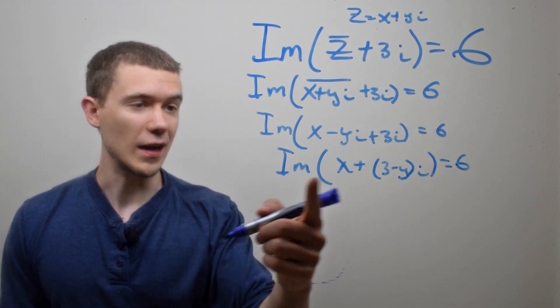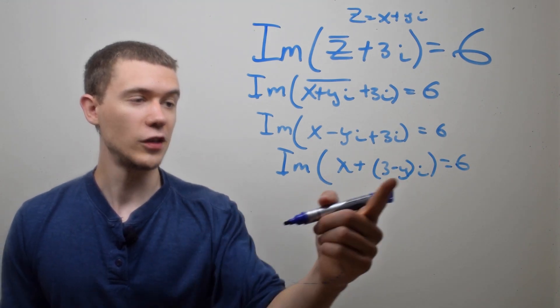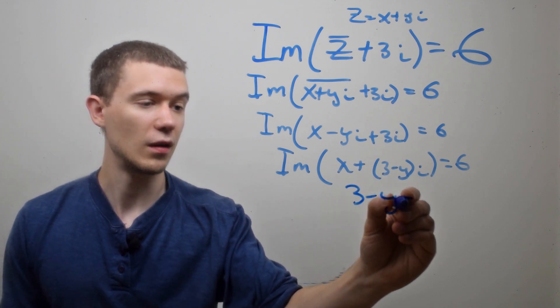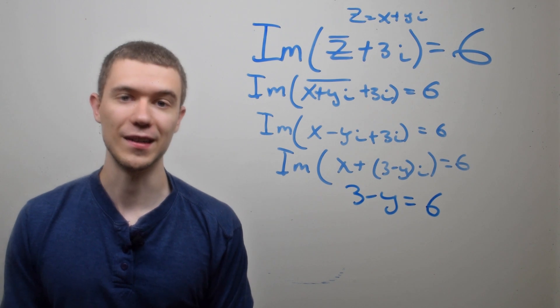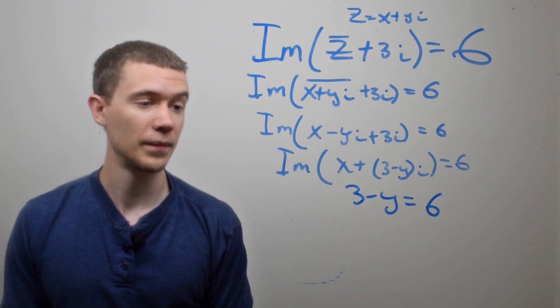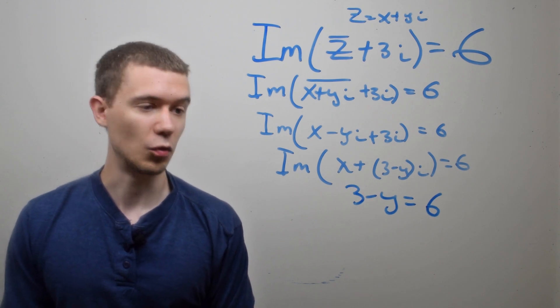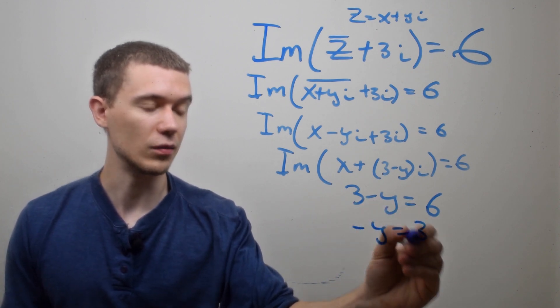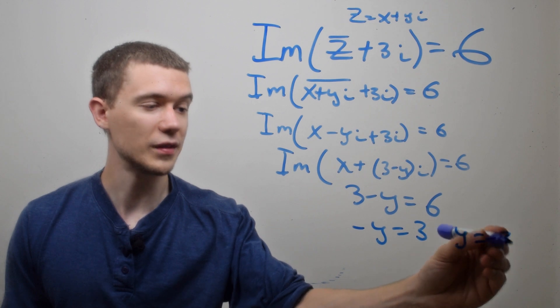Okay, what's the imaginary part of this? Well the imaginary part of this is simply the 3 minus Y. That's whatever is attached to the I. That's the imaginary part. And now I can simply solve for Y. If I subtract 3, I get negative Y equals 3, or Y equals negative 3.